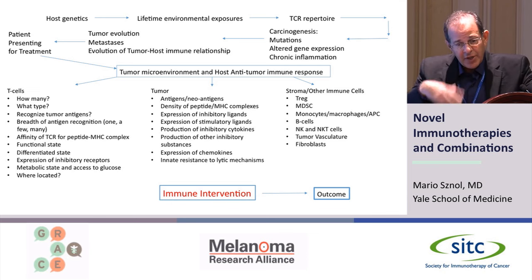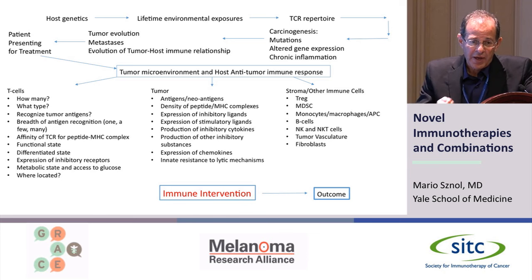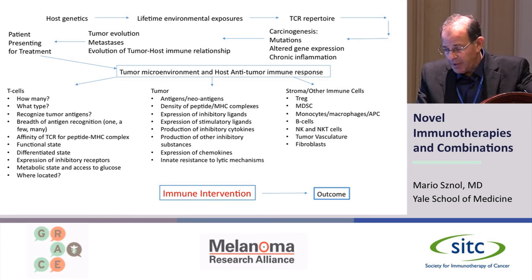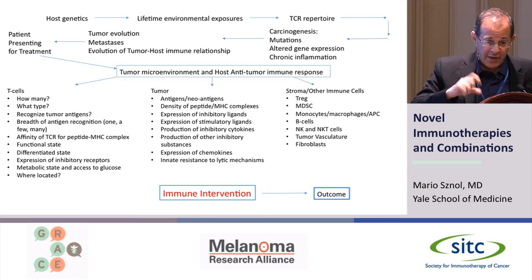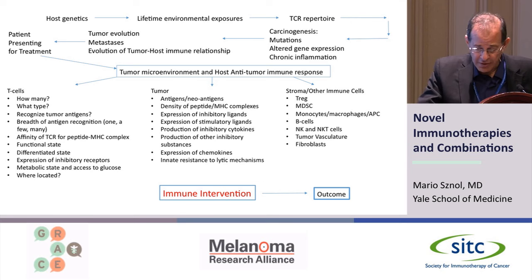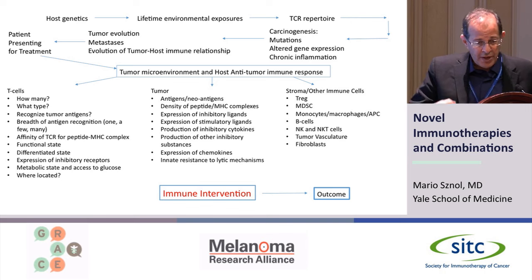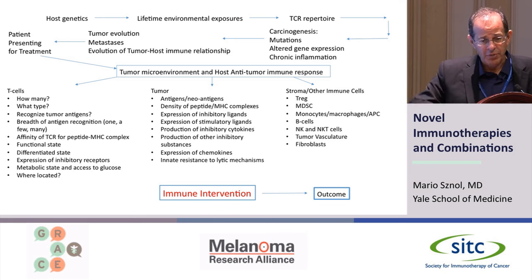There are other cells in the tumor — a tumor is not just tumor cells and lymphocytes. There are lots of other cells, including blood vessels, that can influence what the immune response looks like. Every tumor in the body could look a little bit differently. Our scientists have looked at the T cell repertoire, and even though the mutations may be very similar between different tumors, the T cells and what they recognize may be very different from one tumor to the next.